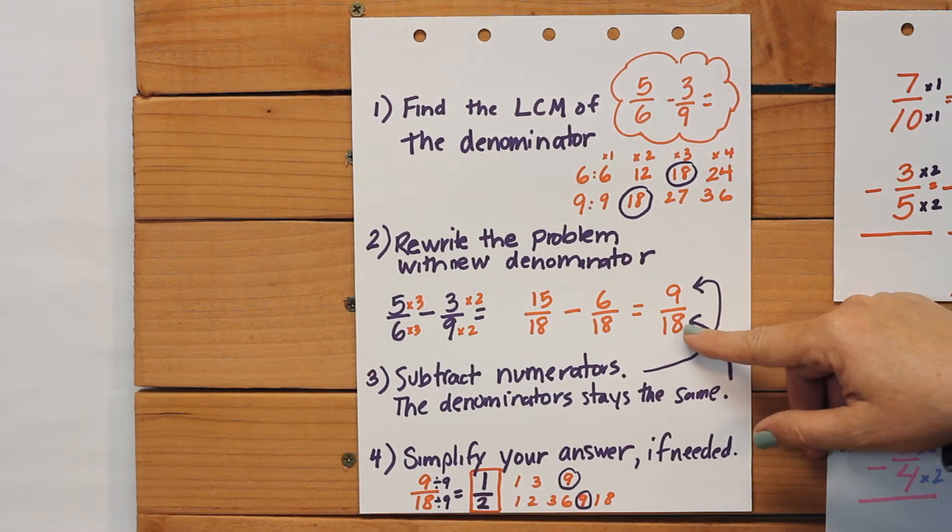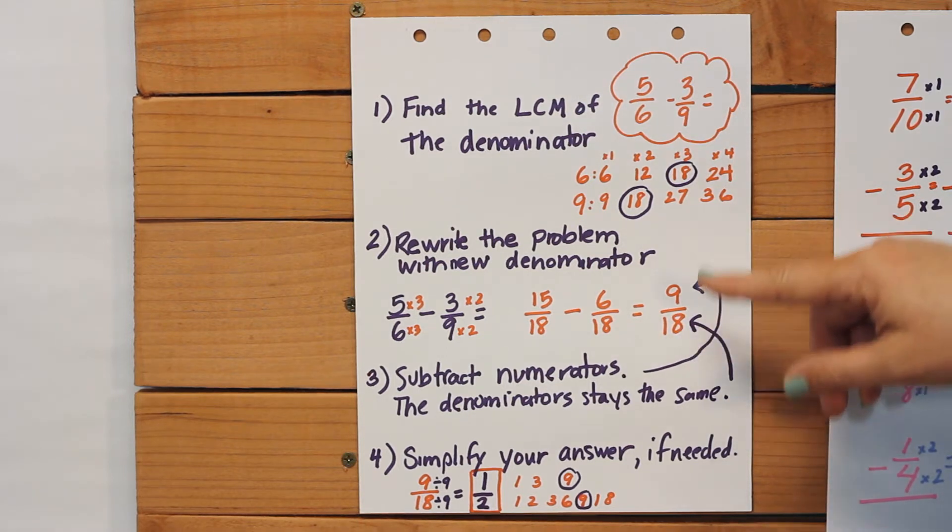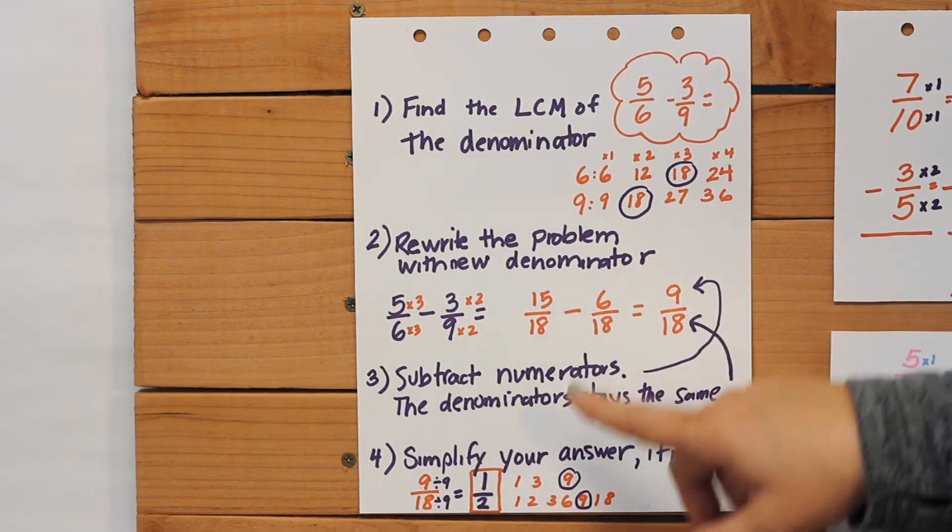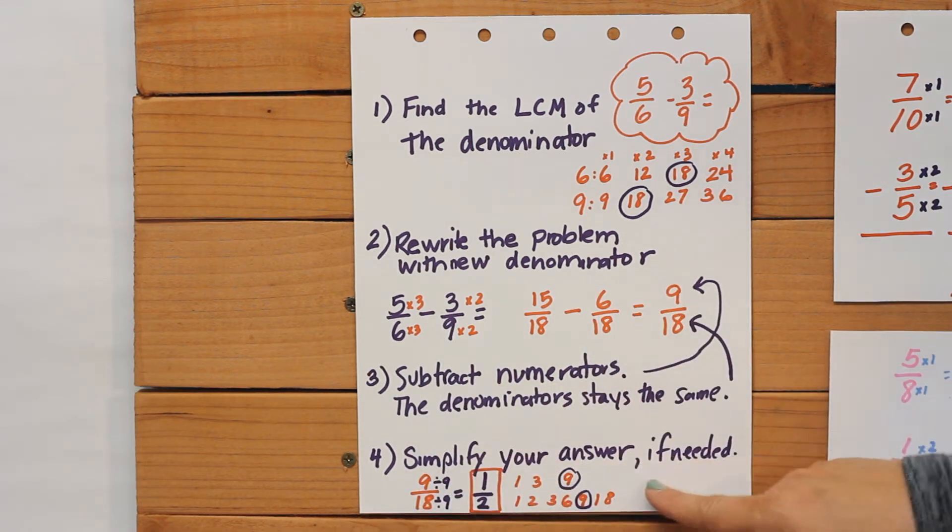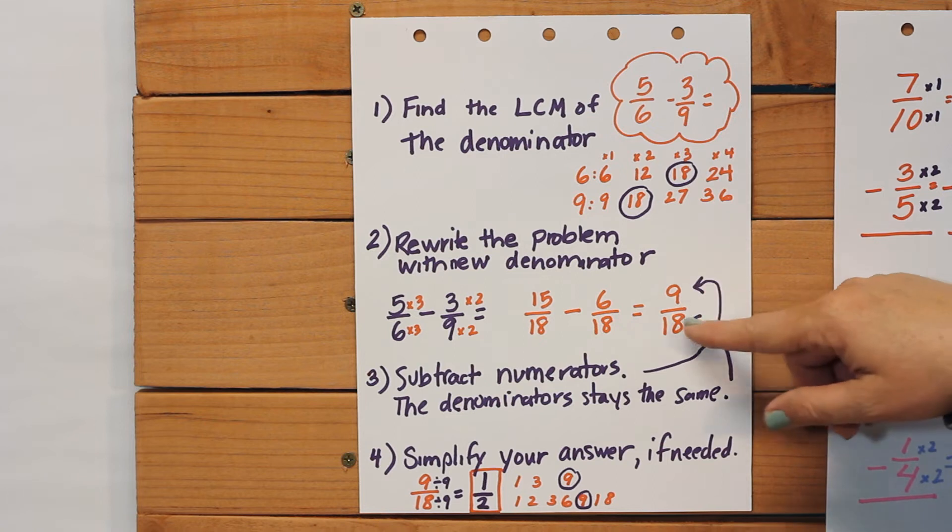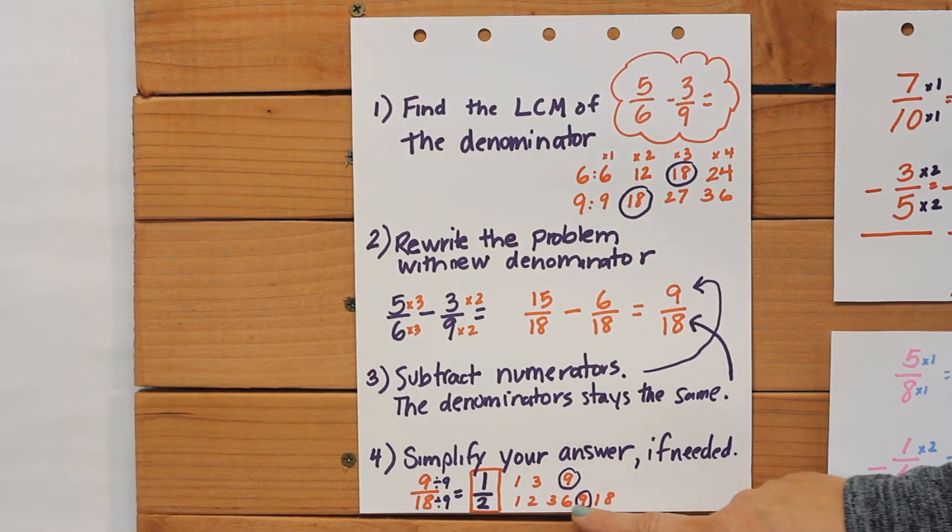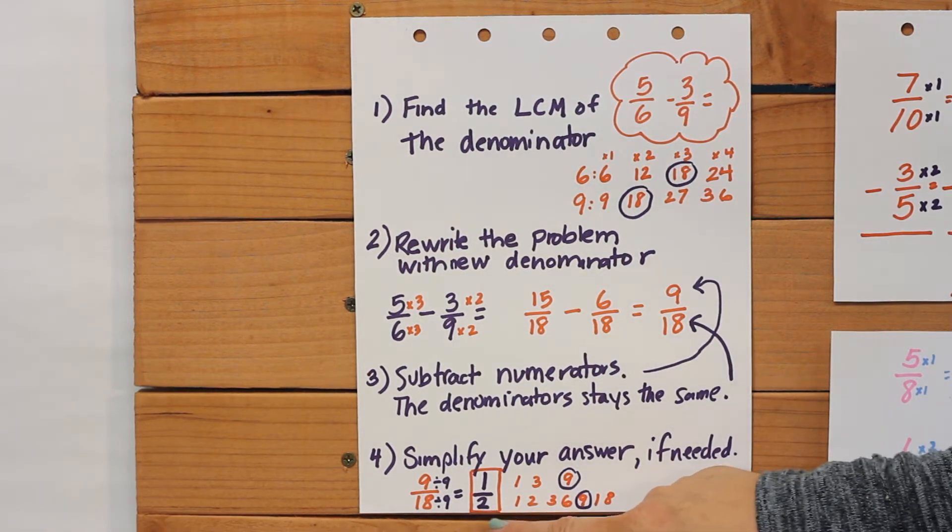So we would think that would be our final answer, but remember we have to always simplify our answer. We already subtracted, and now we have to look at our answer and we have to simplify it. So 9/18, we're supposed to find the least common denominator now so that we can simplify this.